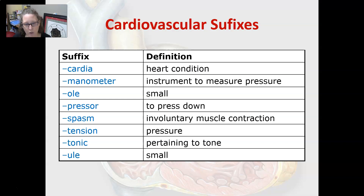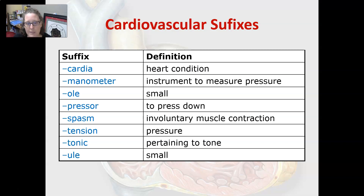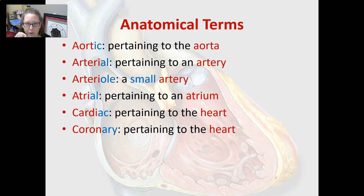The suffix -ule means small, so arteriole and venule mean small arteries and small veins. Pressor means to press down, think lowering blood pressure. Spasm is an involuntary muscle contraction. Tension is pressure, and tonic is pertaining to tone. Now let's go over a few anatomical terms specific to the cardiovascular system.